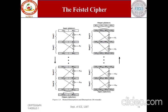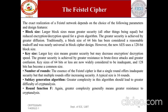The round function F takes a right half block of w bits and a sub-key of y bits, producing an output of length w bits. Following the substitution, a permutation is performed consisting of the interchange of the two halves of the data. This structure is a particular form of the substitution-permutation network proposed by Shannon. The exact realization of a Feistel network depends on choices of block size, key size, number of rounds, sub-key generation algorithm, and round function.